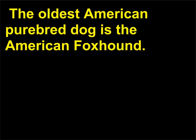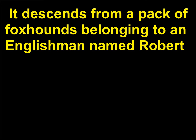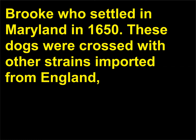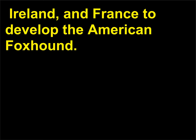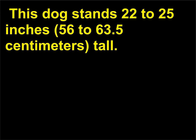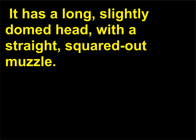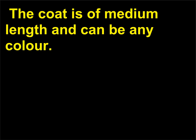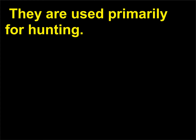The oldest American purebred dog is the American foxhound. It descends from a pack of foxhounds belonging to an Englishman named Robert Brooke, who settled in Maryland in 1650. These dogs were crossed with other strains imported from England, Ireland, and France to develop the American foxhound. This dog stands 22 to 25 inches (56 to 63.5 centimeters) tall, has a long, slightly domed head with a straight, squared-out muzzle, and a coat of medium length that can be any color. They are used primarily for hunting.